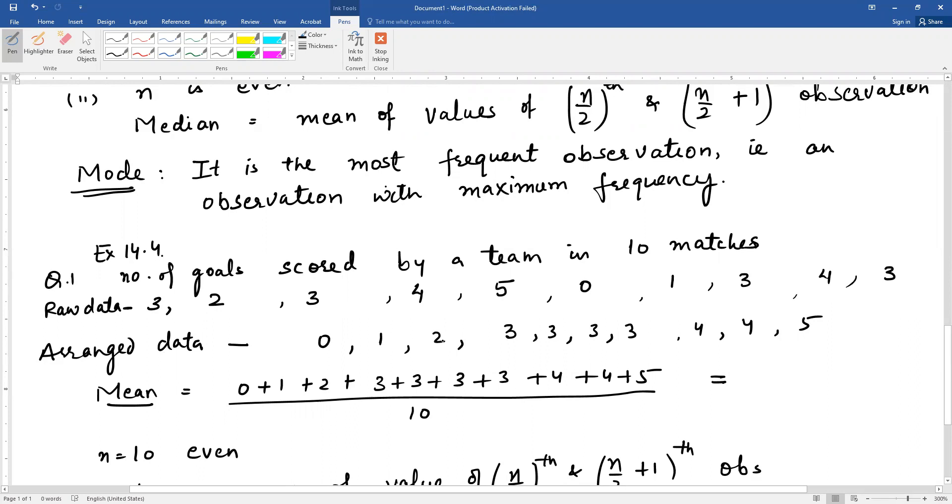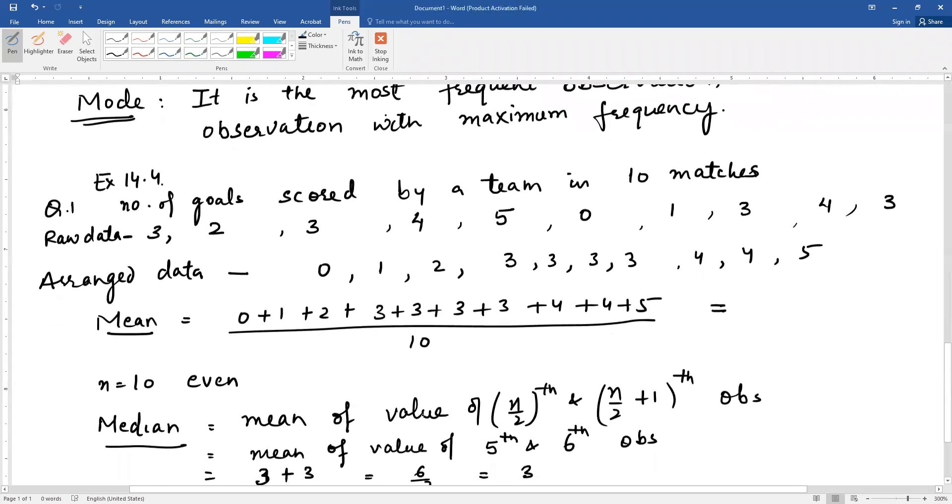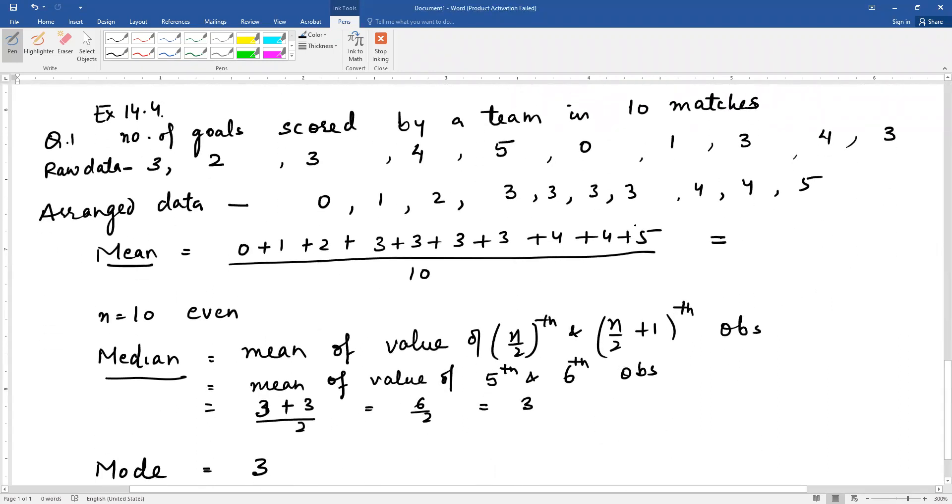The smallest is 0, then 1, then 2, then 3 comes 4 times so we have to write it 4 times, then 4 comes 2 times, and then 5. Mean has been found: add all observations, and since there are 10 observations, divide by 10. I hope you will do this calculation yourself now. Add all these, divide by 10, then you will get the answer for mean.